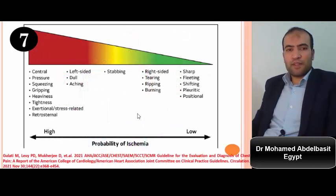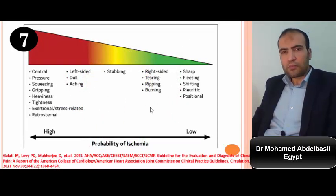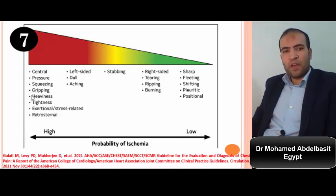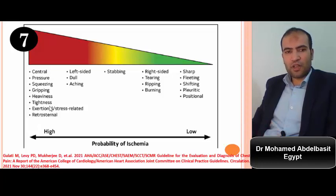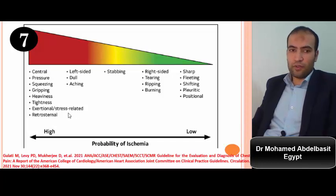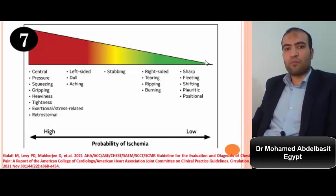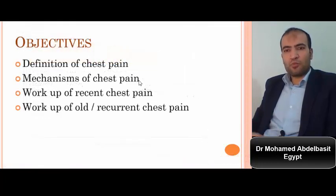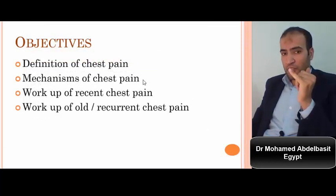Rule number seven: respect the risk stratification for the probability of ischemia. If the pain is central, pressure-like, squeezing, grabbing, heaviness, tightness, exertional, or retrosternal, the probability of ischemia is high. However, if the patient complains of sharp, fleeting, shifting, pleuritic, or positional pain, the probability of ischemia is very low.